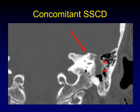Remember to look for concomitant superior semicircular canal dehiscence. Here there is thinning of the entire tegman, a large encephalocele has come down through the tegman mastoidium into the mastoid air cells, and the superior semicircular canal is also dehisced — this portion of the tegman and that portion are both thinned.